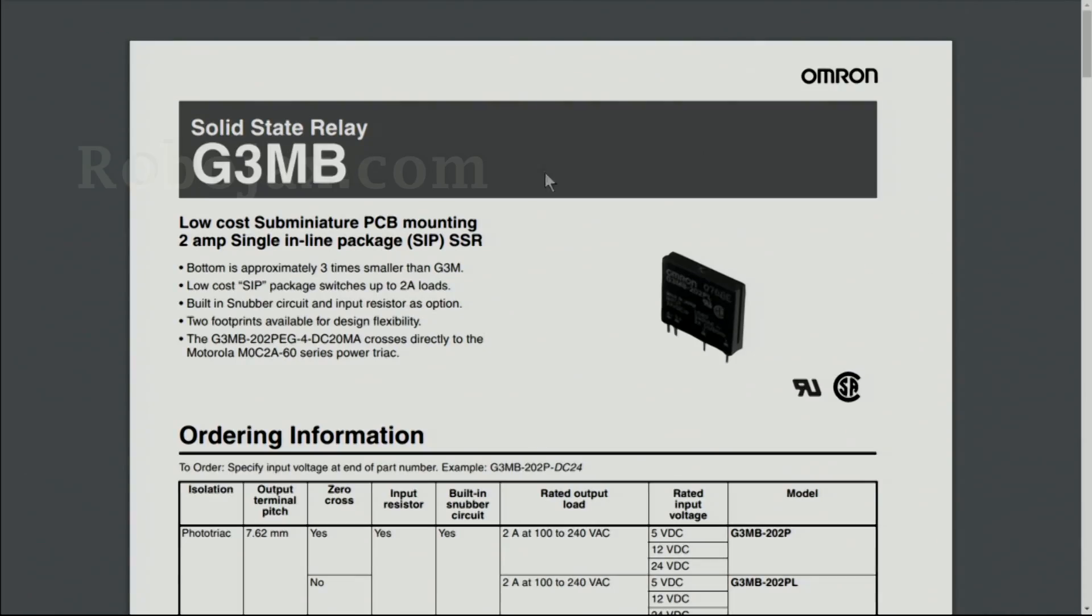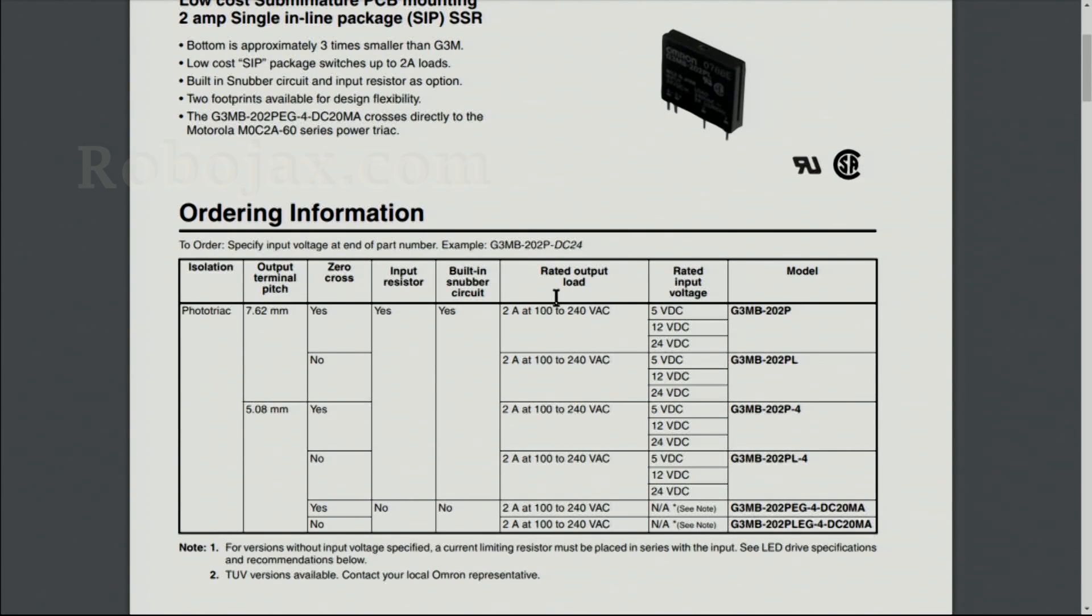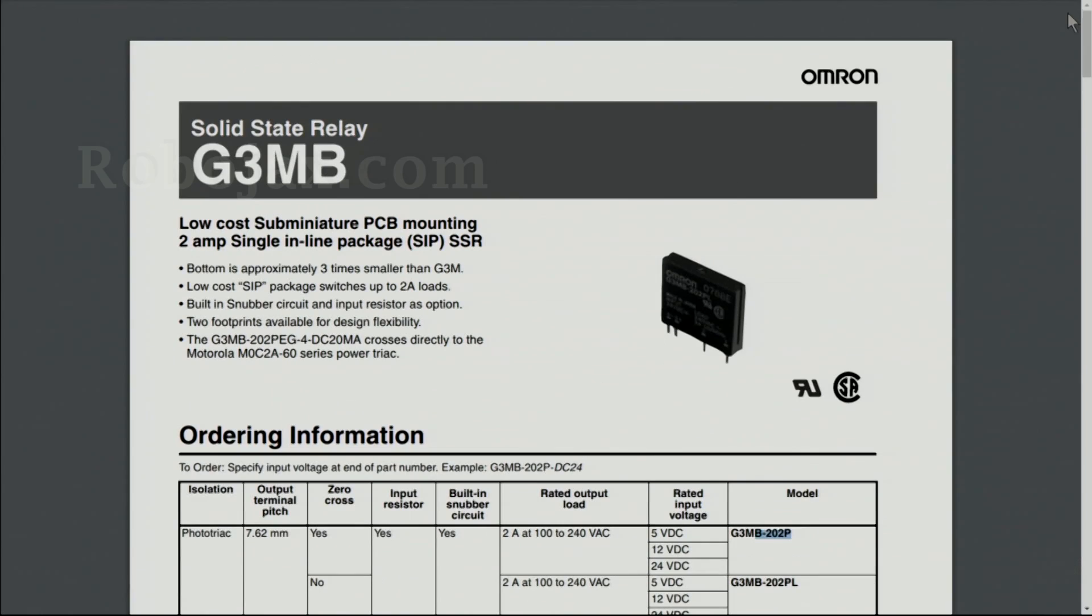This one also needs more energy to operate and is not preferred to operate with battery, especially on portable devices. The model that we are working with is G3MB, and at the end it will have different variations like 202P, 202PL. They just define the voltage. For example, 202P works with 5 volts, and there are 12 and 24 volt versions. I'll provide you the link for this datasheet.